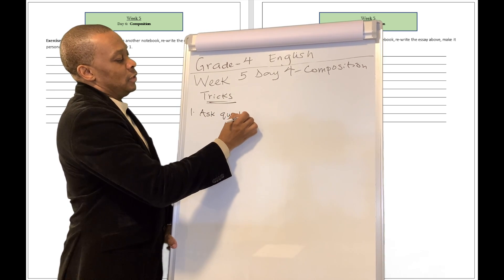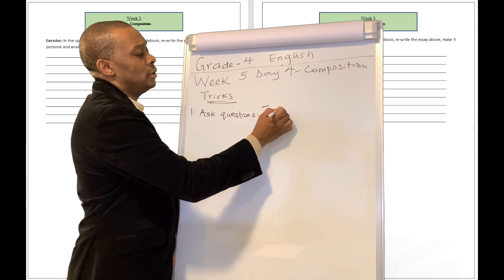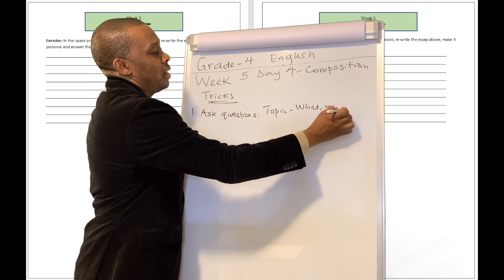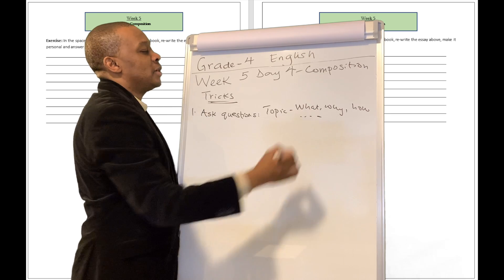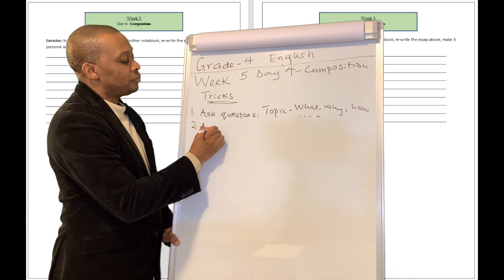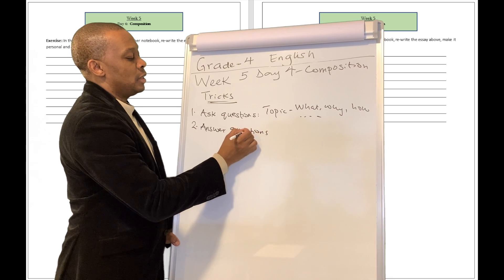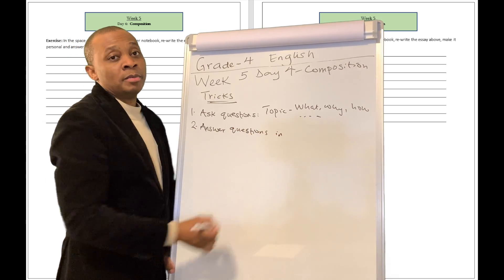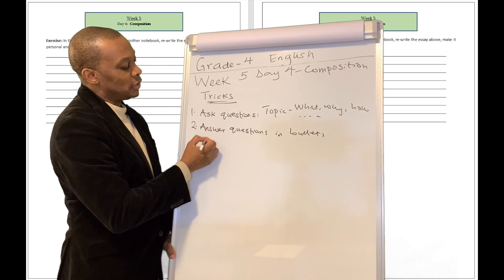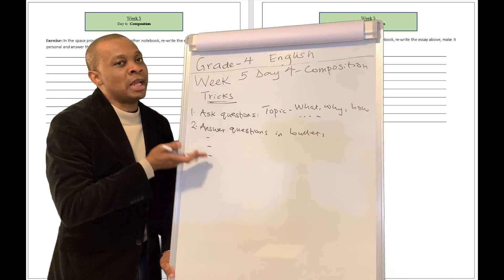Ask yourself, what is this topic all about? Ask yourself questions like what, why, how, and as many questions as possible. Then you are going to answer your questions — in bullets. What that means is you're going to say, this is the answer to the first question, answer to the second question. Just list your answers like that. It's going to make your writing easy for you.